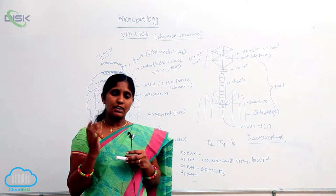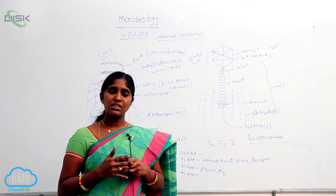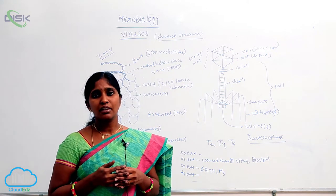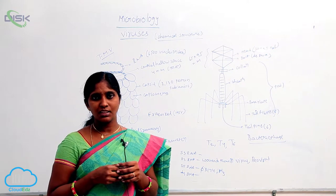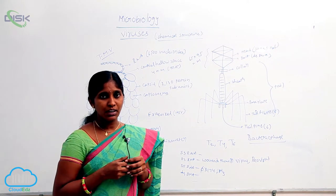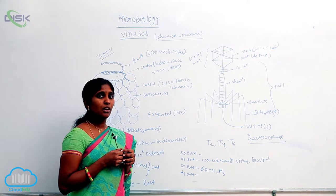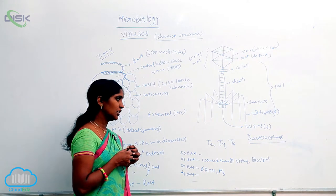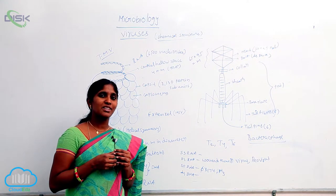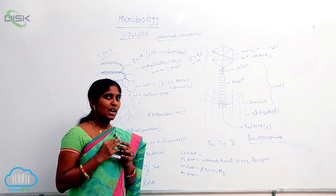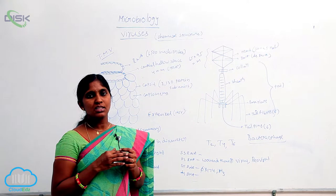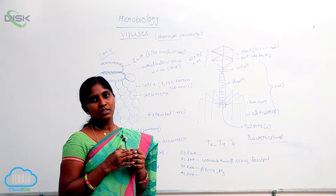And, the DNA or RNA may be single stranded or double stranded also. In the phytophages, RNA is single stranded RNA. But, double stranded RNA also found in wound tumor viruses and reoviruses, rice dwarf viruses also.